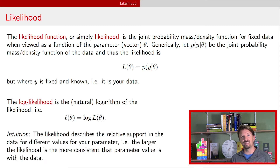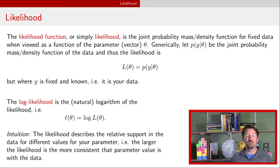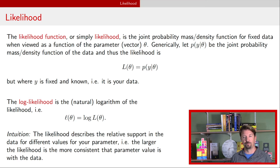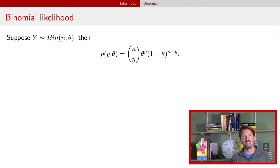The intuition in the likelihood function, or the log likelihood for that matter, is to give you an idea of which values of the parameter vector are more supported by the data. So where the likelihood is larger, those values are more supported than values of the likelihood that are smaller. So let's get some examples. We talked last time about the binomial distribution, so let's go ahead and talk more about it.